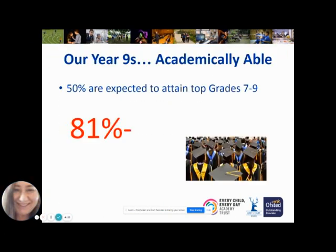A little bit about this year 9 cohort: they are extremely able, with 50% of them expected to attain top grades 7 to 9 at GCSE. One of the questions I asked the year 9s in the post-16 survey is how many of them are planning to go to university. It is a clearly capable and aspirational year group because 81% of them say that they do want to go to university.